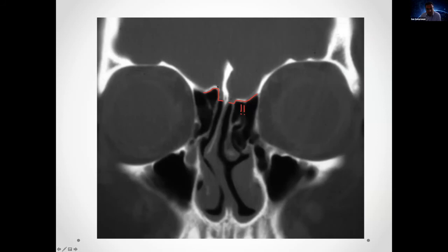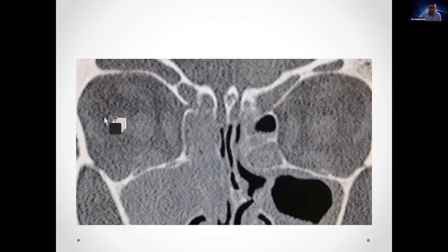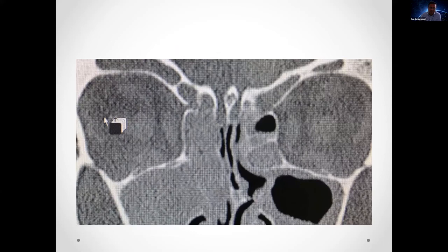The anterior ethmoidal artery courses from lateral to medial in an anterior manner. Importantly, 40% can be in a bony mesentery, so when removing lamellae they can be at risk. The Keros depth should be measured on a coronal scan at the level of the anterior ethmoidal artery — this is where the roof is at its thinnest, because the artery goes intracranially briefly to give a meningeal branch before returning to the nose to supply the nasal septum.